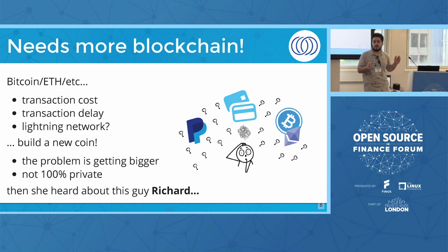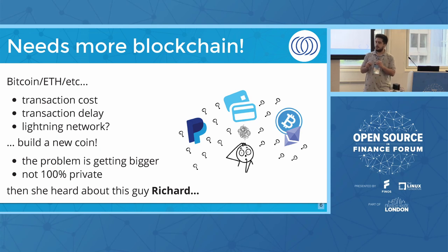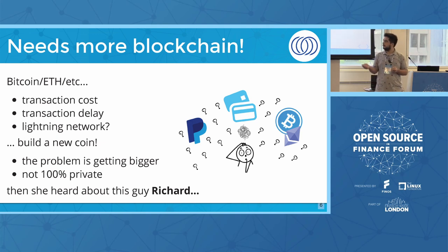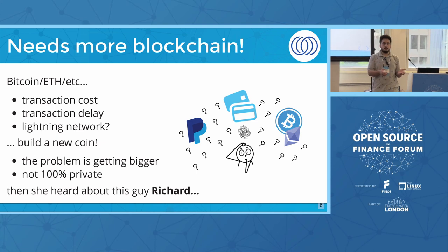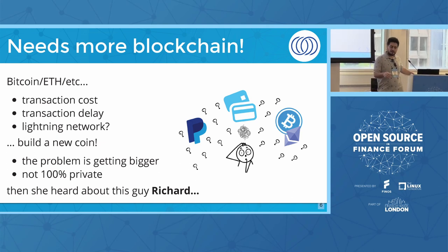Another guy came — Bob — and suggested an idea: you need blockchain. Maybe it's a solution, but she started thinking about the main blockchains — Bitcoin, Ethereum — and for her particular problem, the transaction cost and transaction delay may be an issue. Lightning Network is promising, but building a new coin for this particular case seems like a bigger problem than the initial one. So she keeps investigating what is around.